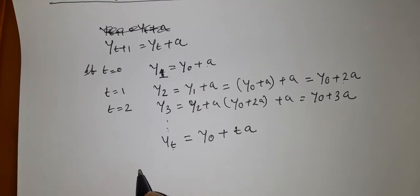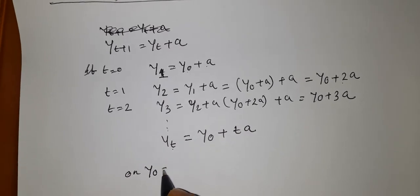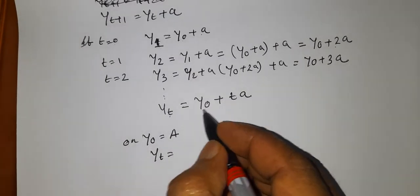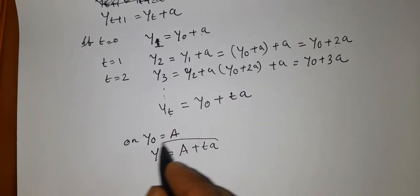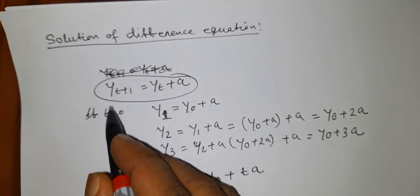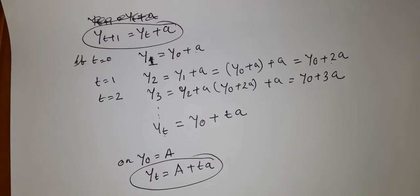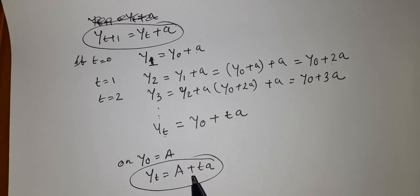If the initial value y_0 is a, then y_t = a + t·a. This is the solution of the difference equation y_{t+1} = y_t + a, obtained using the iterative process.